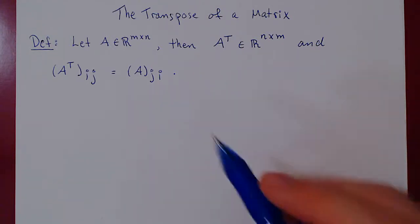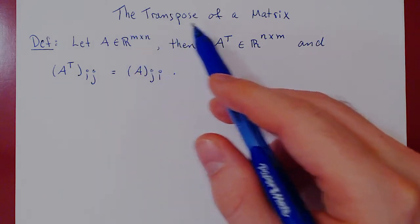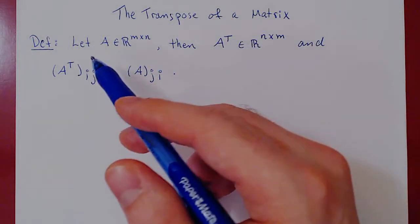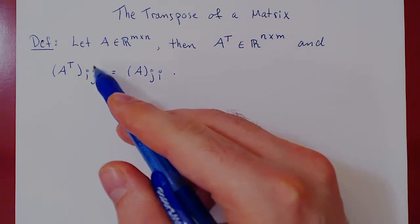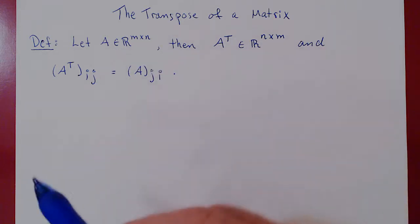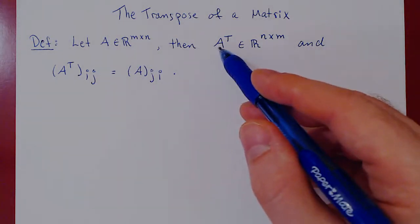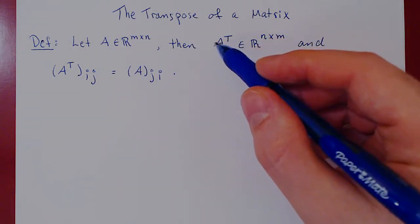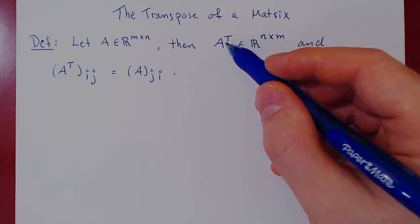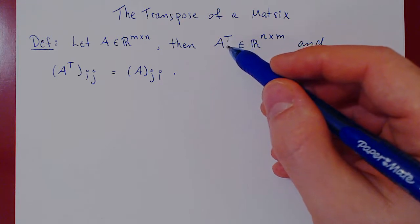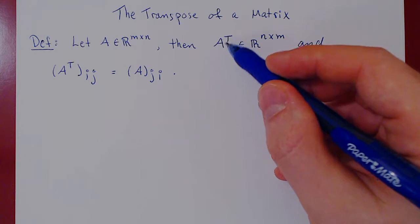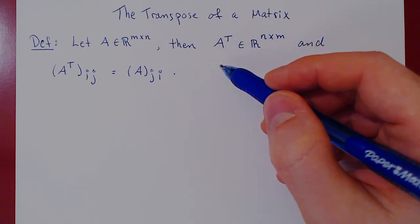In this video, we are going to look at the transpose of a matrix. Let's look at the definition and then consider some examples. Take A to be some m by n matrix. The transpose of A is denoted by writing A with an uppercase T as an exponent. Be careful — this is not an exponent; it simply means the transpose of A. That's why we use an uppercase T and not a lowercase t.